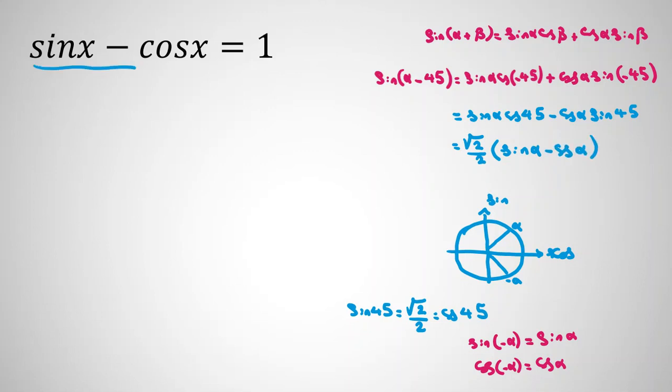Now here we have sin x minus cos x. We've reached sin alpha minus cos alpha. We can say sin x minus 45 is root 2 over 2 sin x minus cos x. And we know sin x minus cos x is 1. So it will be root 2 over 2.